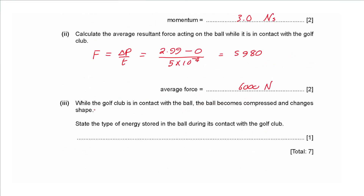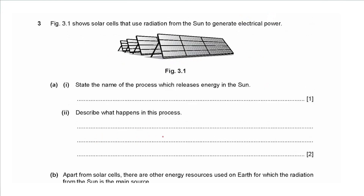Part iii says: while the golf club is in contact with the ball, the ball becomes compressed and changes shape. State the type of energy stored in the ball during contact. The energy stored due to deformation or changing shape is called elastic energy or strain energy — you can write either one.